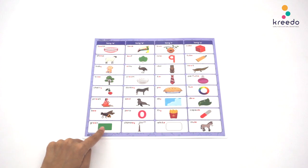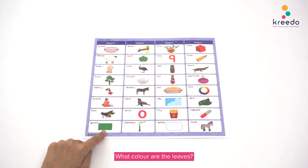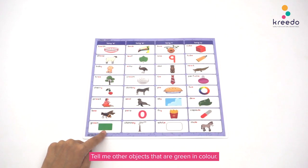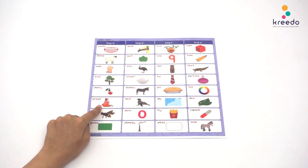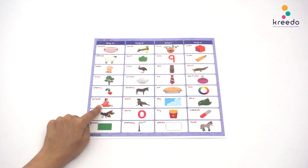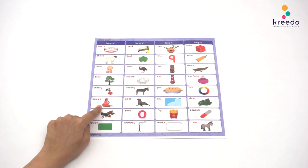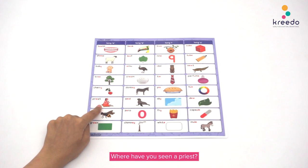Point to green and ask what is this? Green. Here are a few questions to ask: What color are the leaves? Tell me other objects that are green in color. Point to the priest and ask who is this? Priest. Here are a few questions to ask: Where have you seen a priest? What does a priest do?